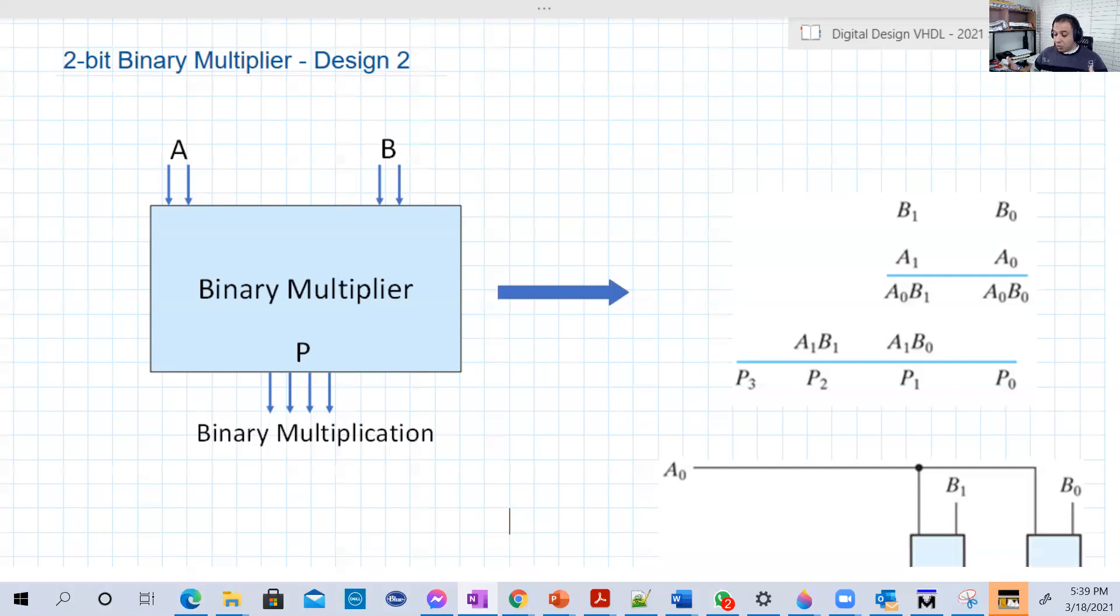Now we're going to do the multiplication and see if we can deduce or get some hints out of that operation so we can do the design in a smarter way. We are multiplying two numbers, each one is two bits. This is the first number, which is B, this is second number, which is A.